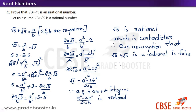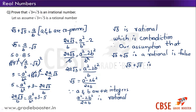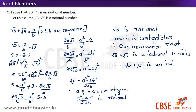Therefore root 3 plus root 5 is an irrational number.